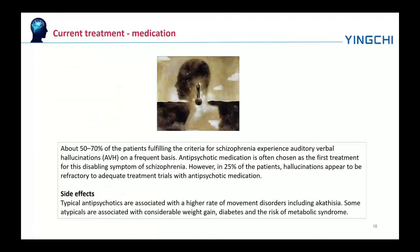About 50 to 70% of patients fulfilling the criteria for schizophrenia experience auditory verbal hallucinations. Antipsychotic medication is often chosen as a first treatment for this disabling symptom; however, in 20% of patients, hallucinations appear to be refractory to adequate treatment trials with antipsychotic medication. The side effects of typical antipsychotics are associated with a higher rate of movement disorders, including inability to sit still. Some atypicals are associated with considerable weight gain, diabetes, and risk of metabolic syndrome.